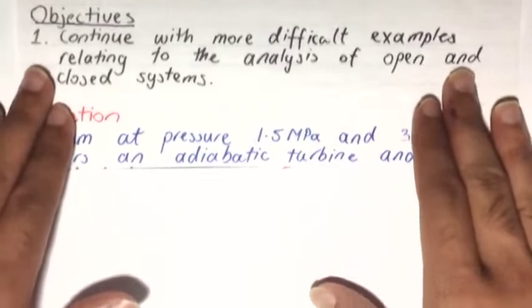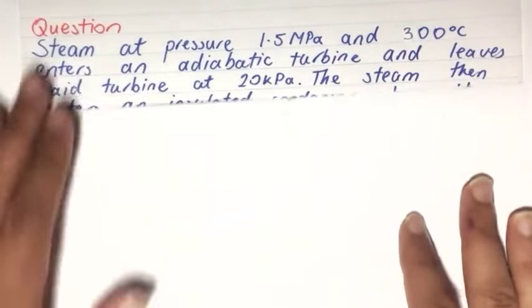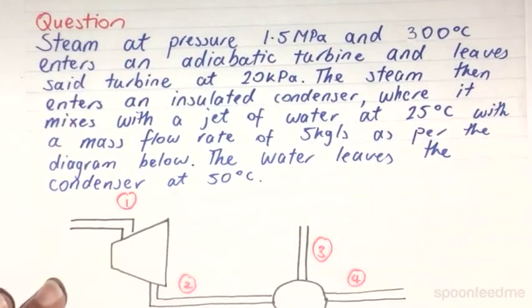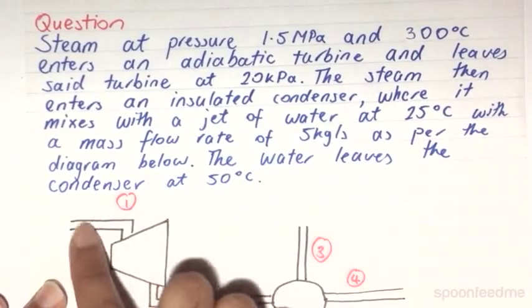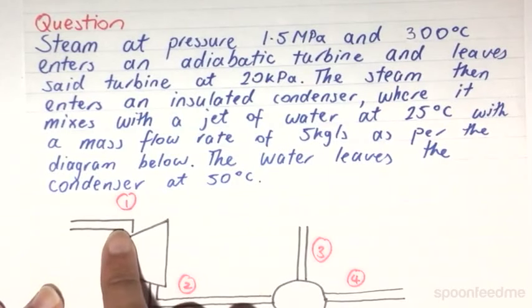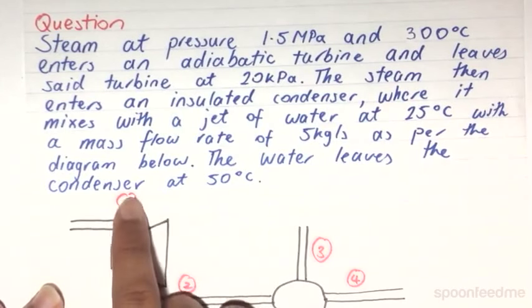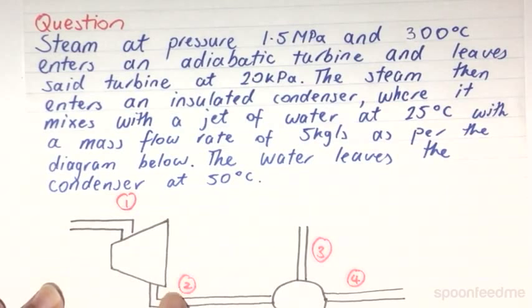So here we have our question. Steam at pressure 1.5 MPa and 300 degrees Celsius at state 1 enters an adiabatic turbine and leaves said turbine at state 2,